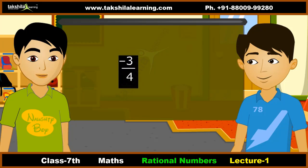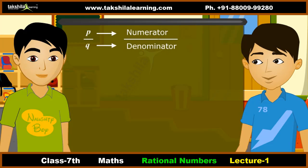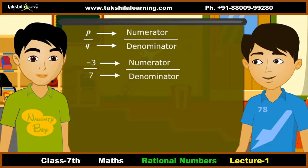Minus 3 by 4 is also a rational number because P equals minus 3 and Q equals 4, and both are integers. In the rational number P by Q, P is the numerator and Q is the denominator. For example, in minus 3 by 7, the numerator is minus 3 and the denominator is 7. Integers are also rational numbers — for example, the integer minus 5 can be written as minus 5 by 1.